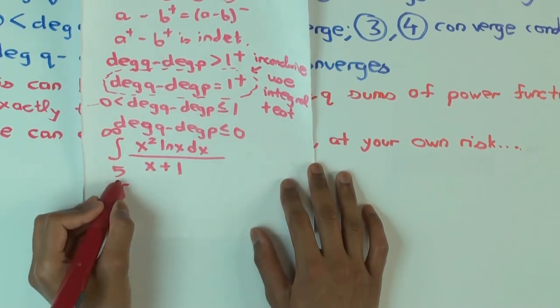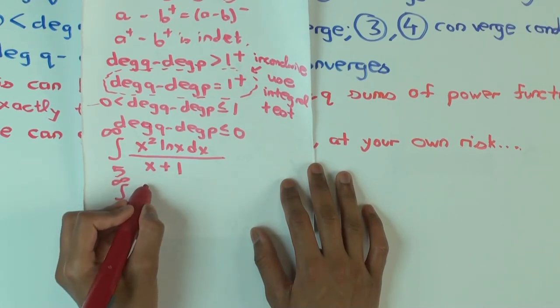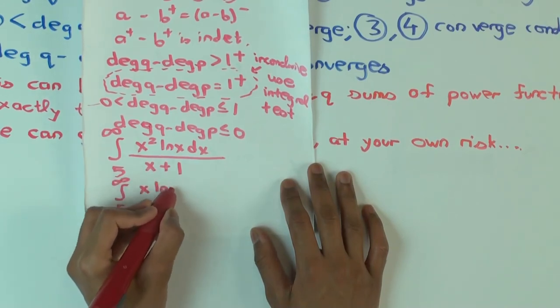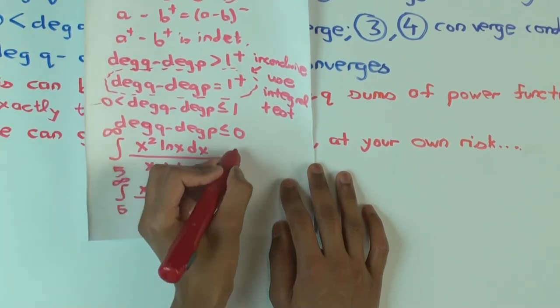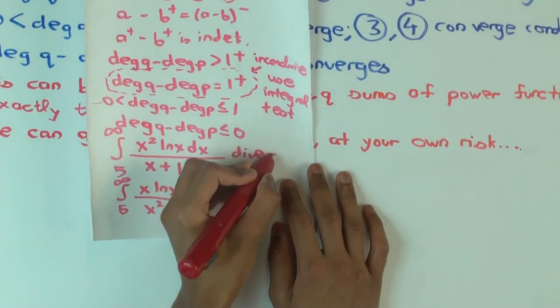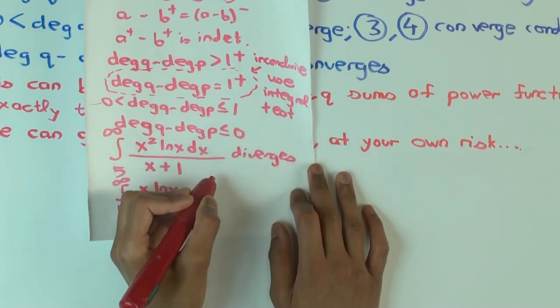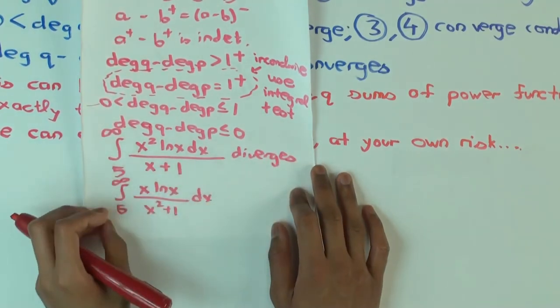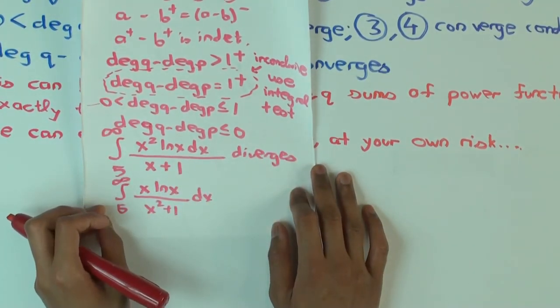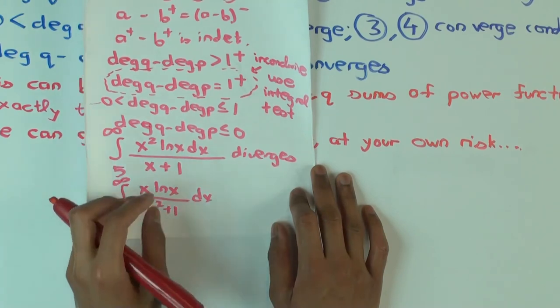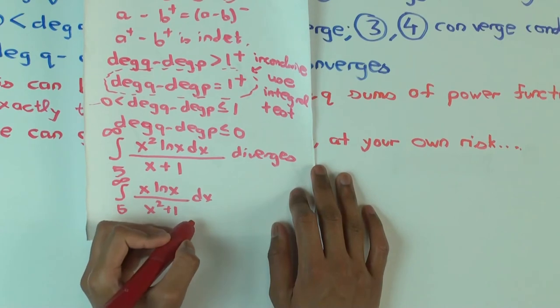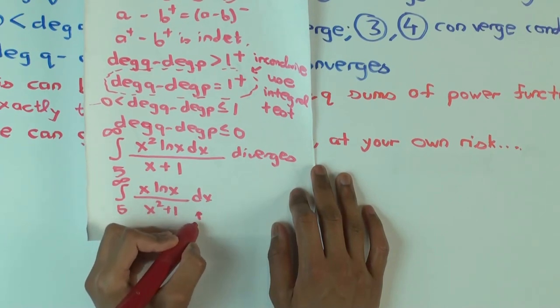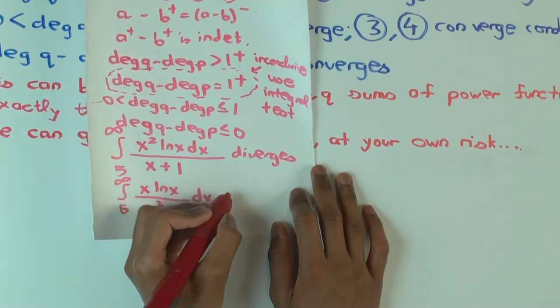What happened if I put 5 to infinity, x ln x over x squared plus 1. So this diverged. What was this? This also diverges. Now what's the degree difference? It's less than 1. It's 1 minus. Right? So this diverges.